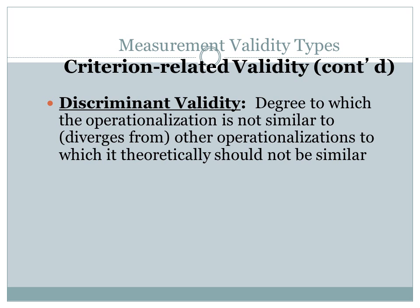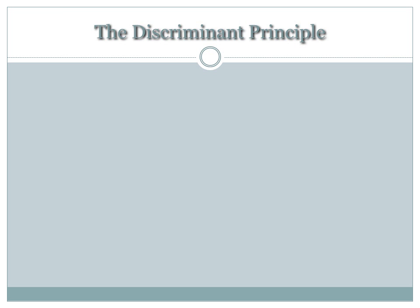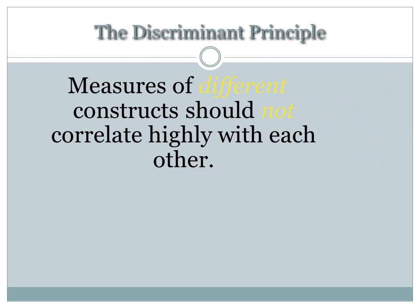Another form of validity is called discriminant validity. Discriminant validity is the same principle but in the opposite direction — it is the degree to which operationalizations that are not similar should diverge. In other words, the correlation should not be high; it should be low. Measures of different constructs should not correlate with measures of another construct.